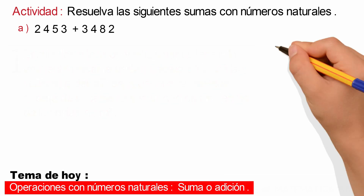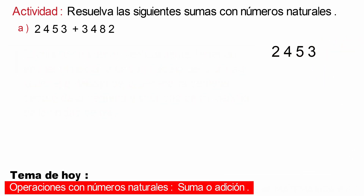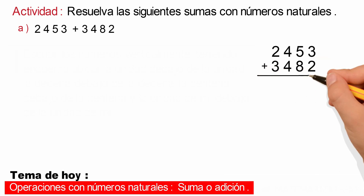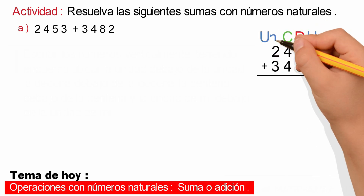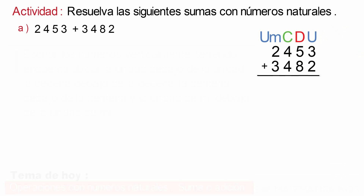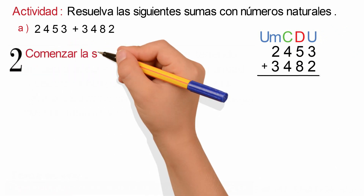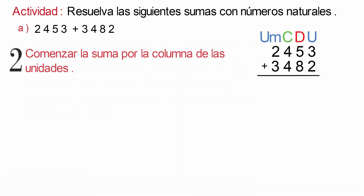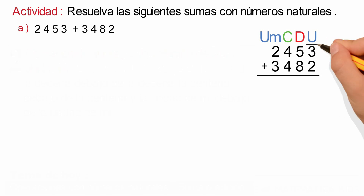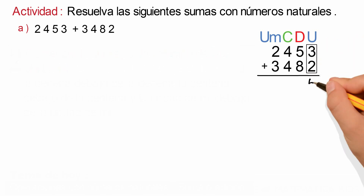Paso número 2: escribiremos los números 2453 y 3482. Antes de comenzar a sumar, identificaremos la columna de las unidades, la columna de las decenas, la columna de las centenas y la columna de las unidades de mil. Comenzar la suma por la columna de las unidades. Procedemos a sumar: 3 más 2 es igual a 5.